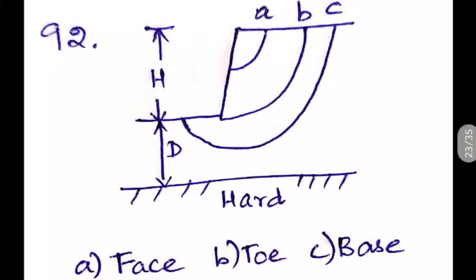So here if the failure occurs at the A, that is the first one that is above the ground level, means it is called as the face failure, and if it is at the ground level means it is toe failure, and if it is below the ground level means it is base failure.